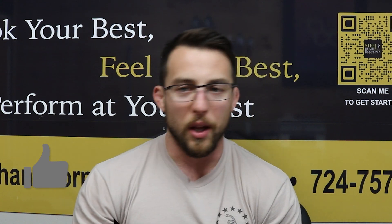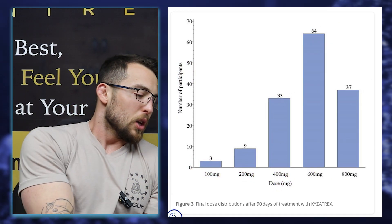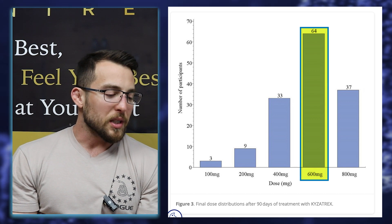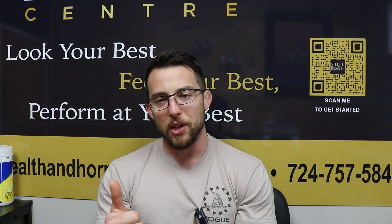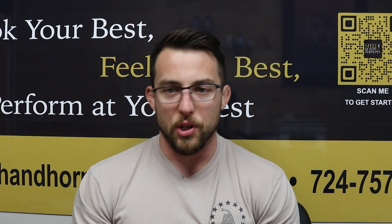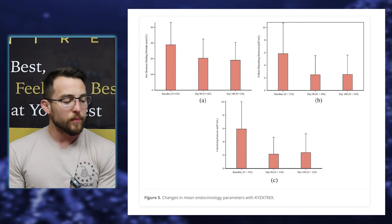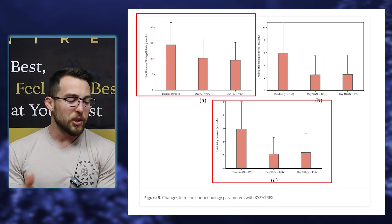You can see in the chart that most people settled in at around 600 milligrams per day. The researchers also noted that the size of the patient and their diabetic status influenced how much they had to take — which makes sense, since a larger person needs more to raise serum levels. The last chart I want to look at shows SHBG, LH, and FSH.